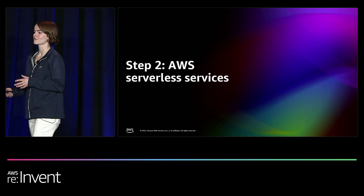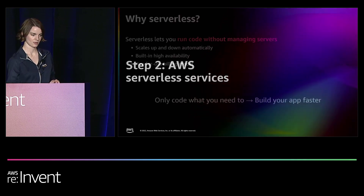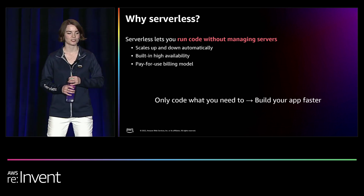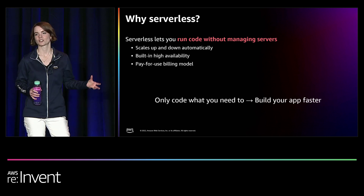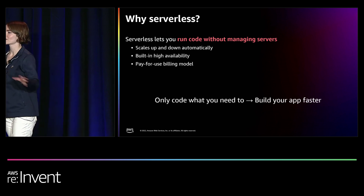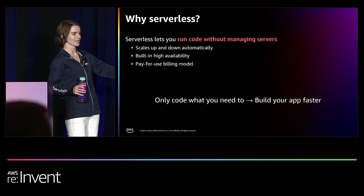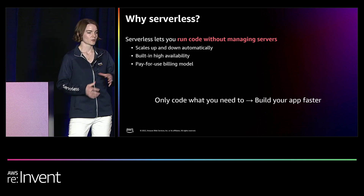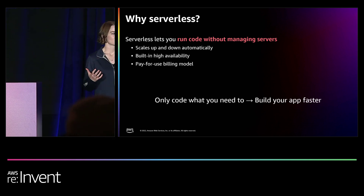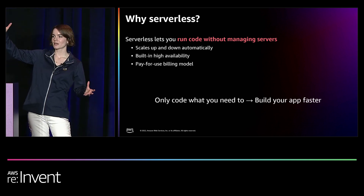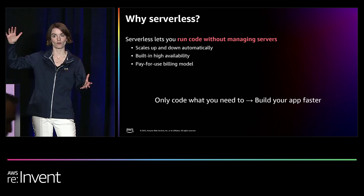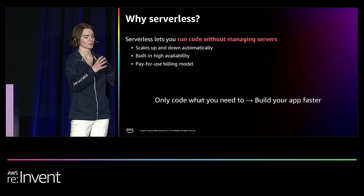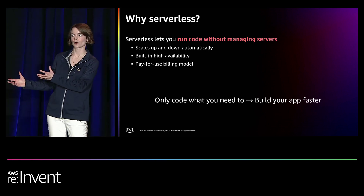Now I want to jump into some of the services we're going to be using — the serverless toolbox. Serverless is about letting you run code without managing the underlying servers. You're never touching, provisioning, scaling, or patching them — that's all offloaded to AWS automatically. You're just running your code. It all scales up and down automatically, gives built-in high availability, and you have a pay-for-use billing model so you're only paying when your code is running. You get to take all that time you would have spent building a scalable architecture and just focus on what makes your application unique.